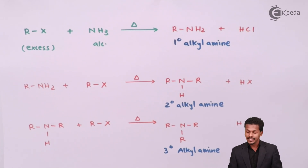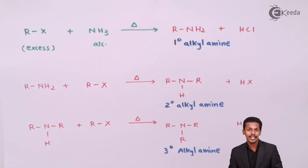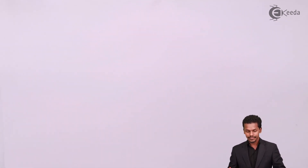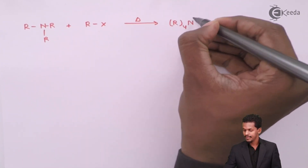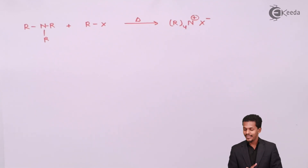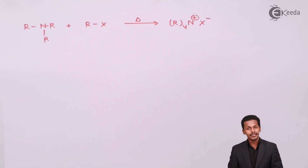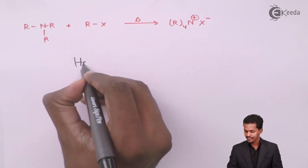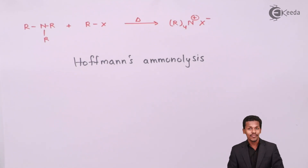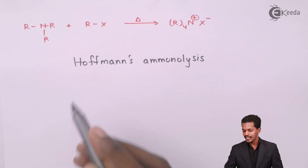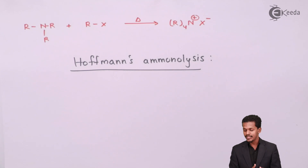The reaction does not stop at the tertiary alkyl amine. The tertiary alkyl amine reacts further with the alkyl halide to form a quaternary ammonium halide. This entire reaction series is known as Hoffman's ammonolysis, and it can also be called alkylation of ammonia.